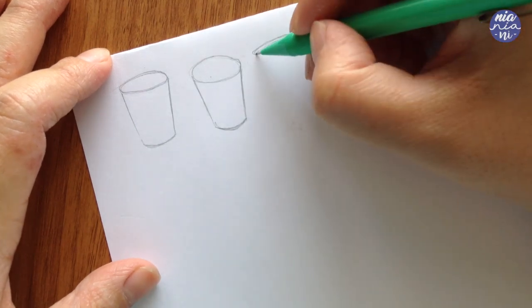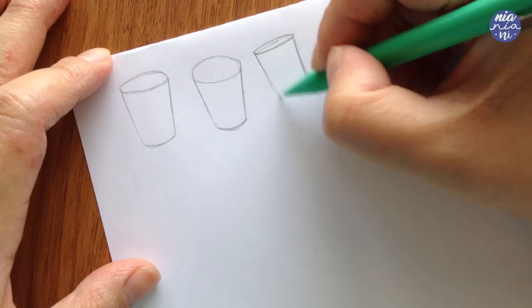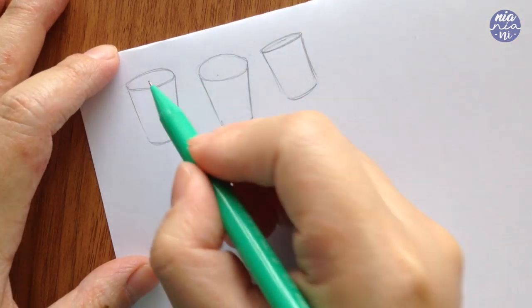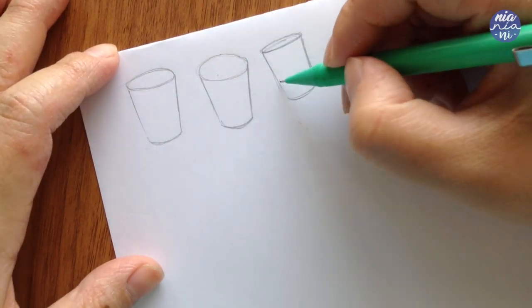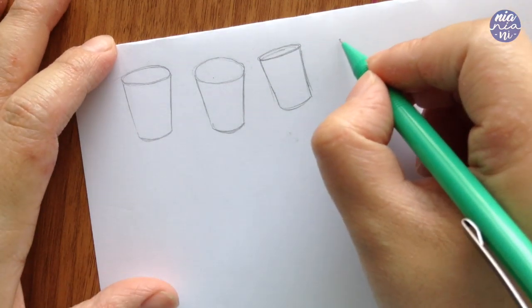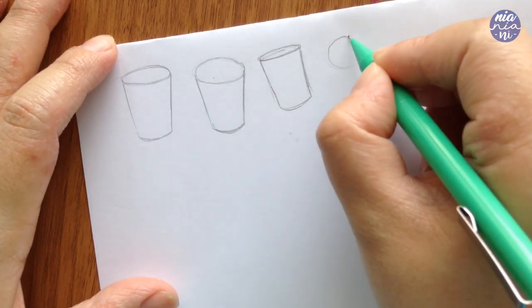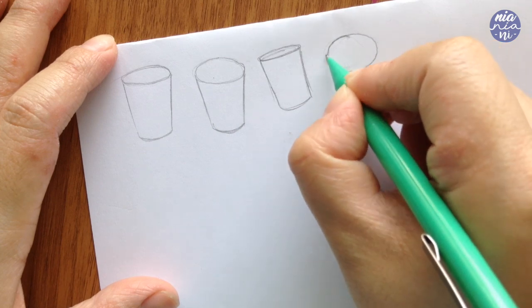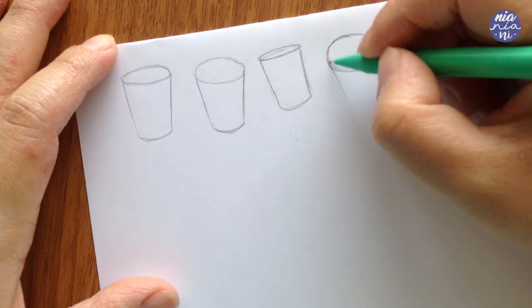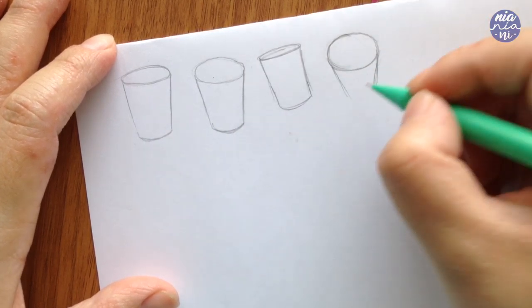Now depending on the thickness or thinness of the oval, that will determine the perspective of the cup itself. So if you show less of the oval, like it's close to being flat, that means you're looking at the cup from the side.